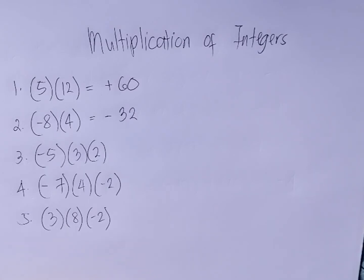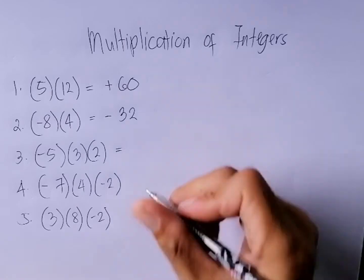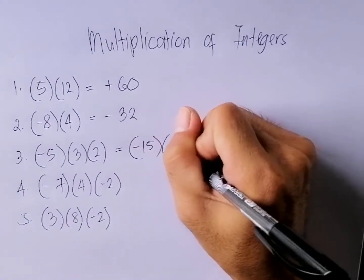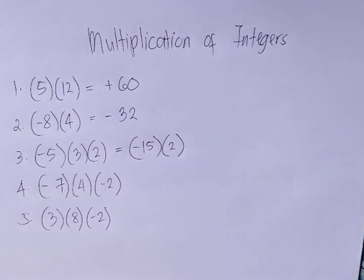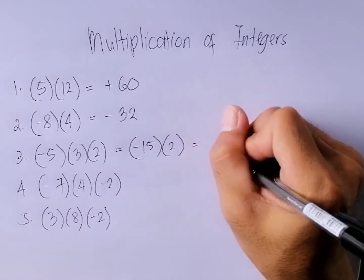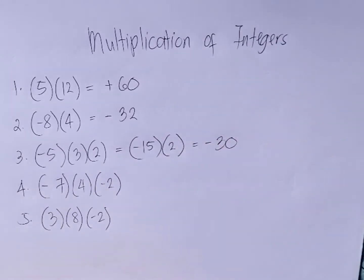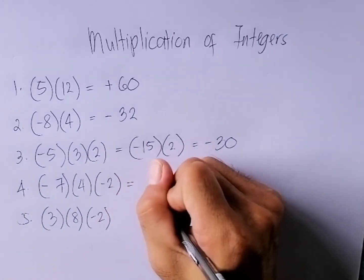Number three: negative five times three times two. First, negative five times positive three — the answer is negative fifteen. Then negative fifteen times positive two is equal to negative thirty.